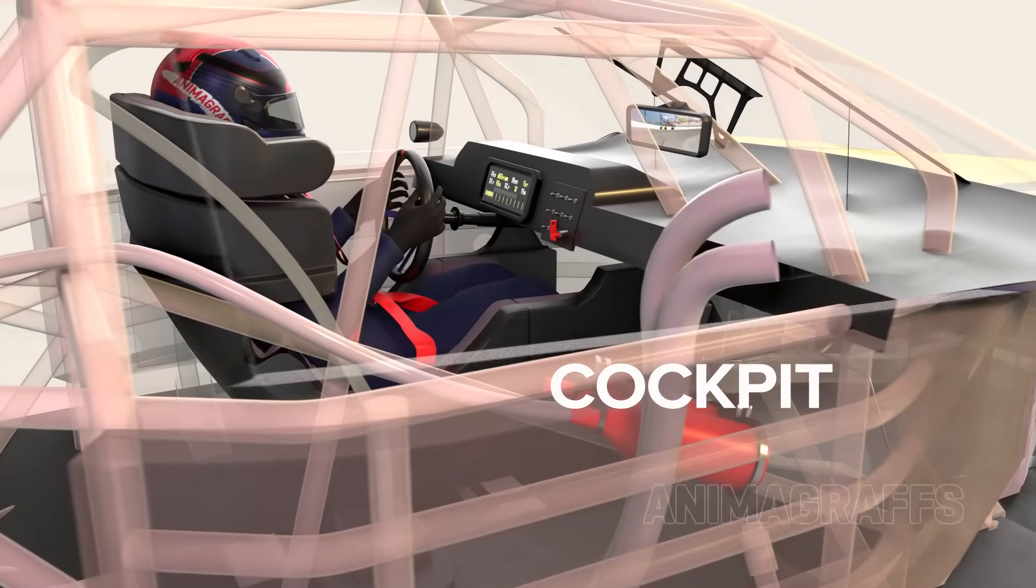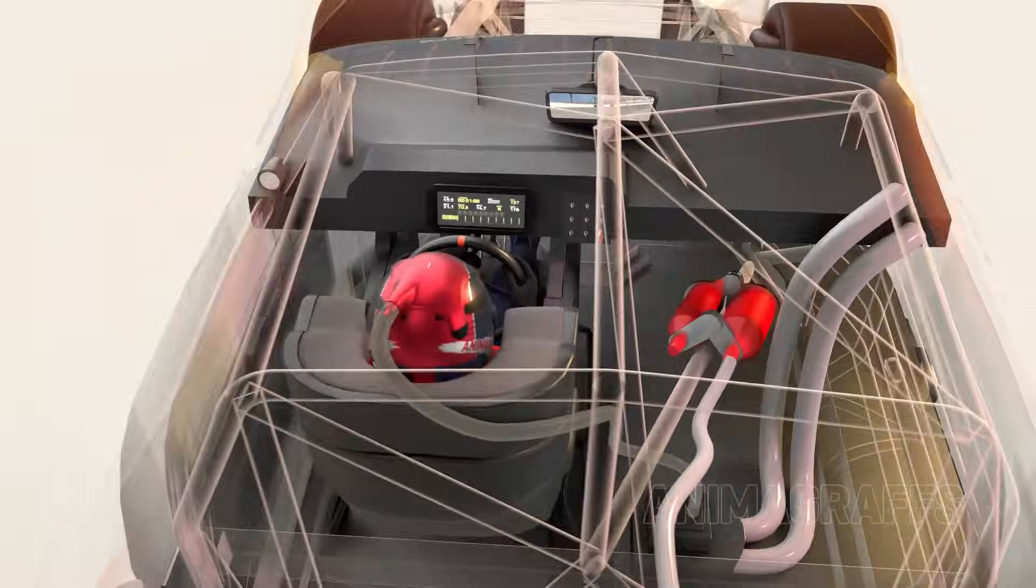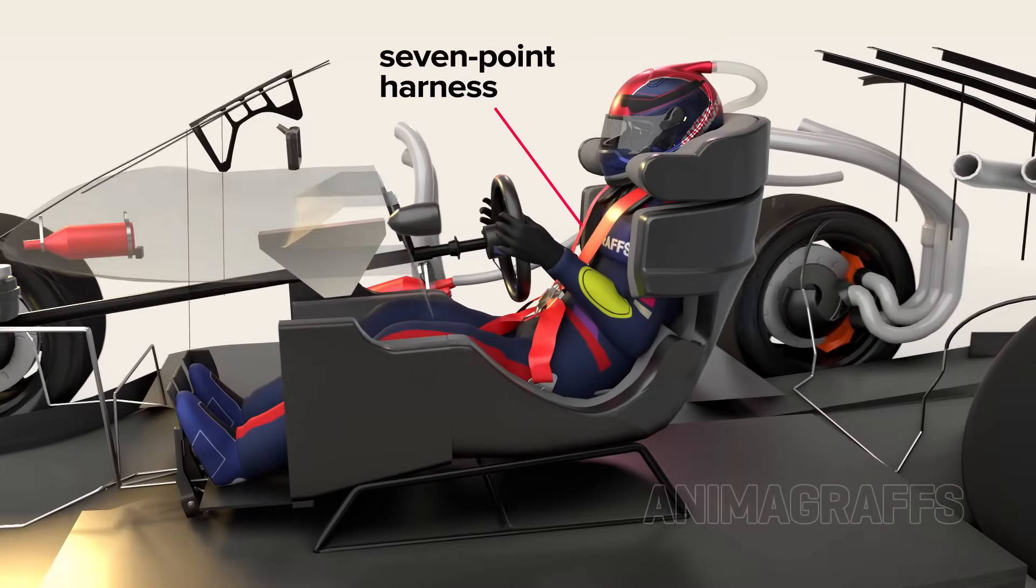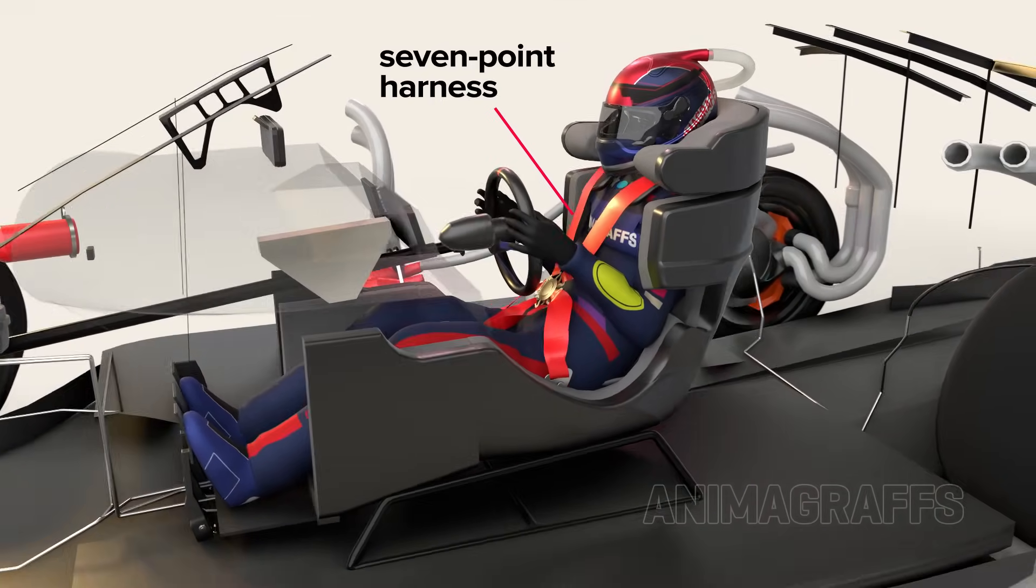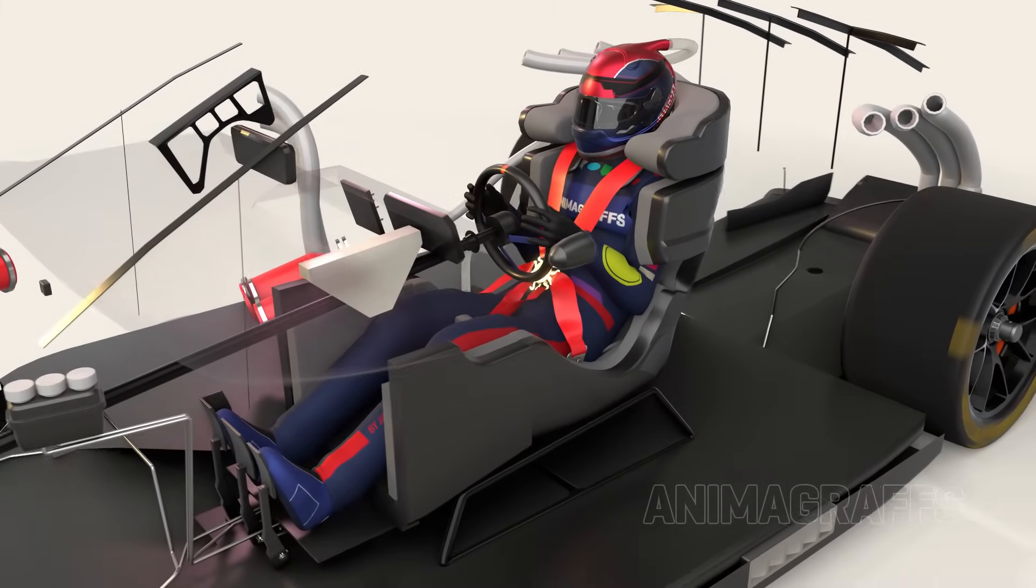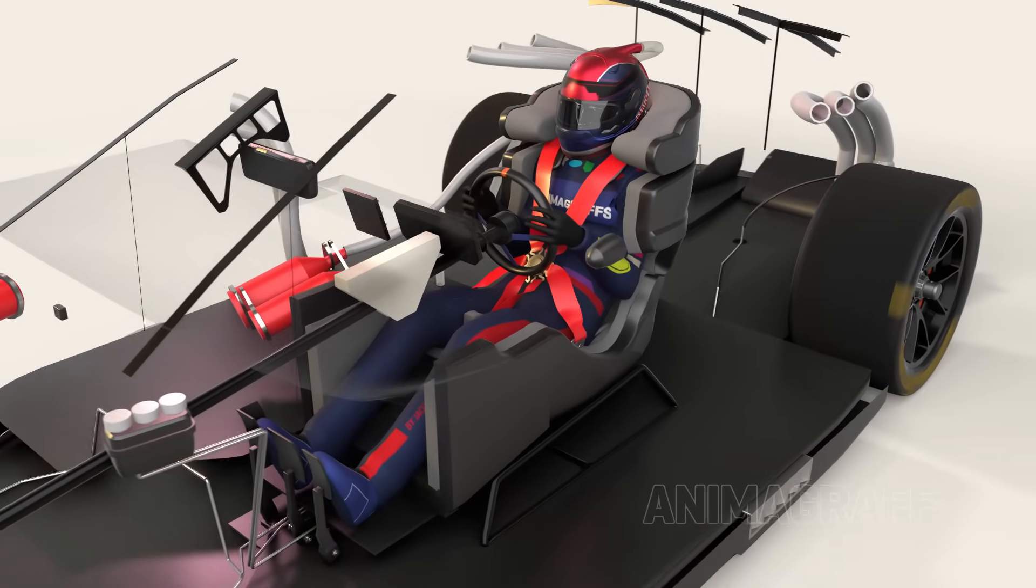Cup car racing seats are crafted from molds taken from a specific driver's body. A seven-point harness keeps the driver in place. The seat wraps around the driver's body wherever possible, and safety structures surround the helmet area.